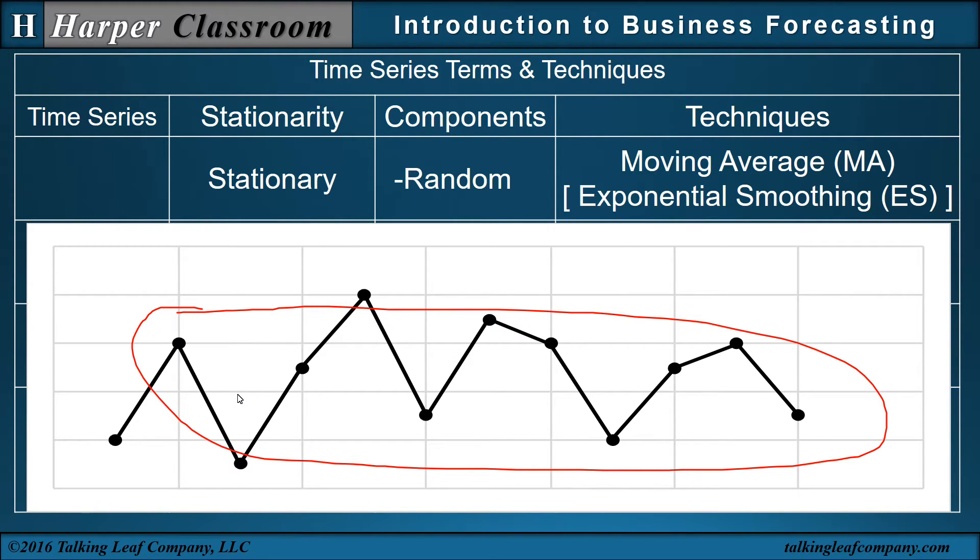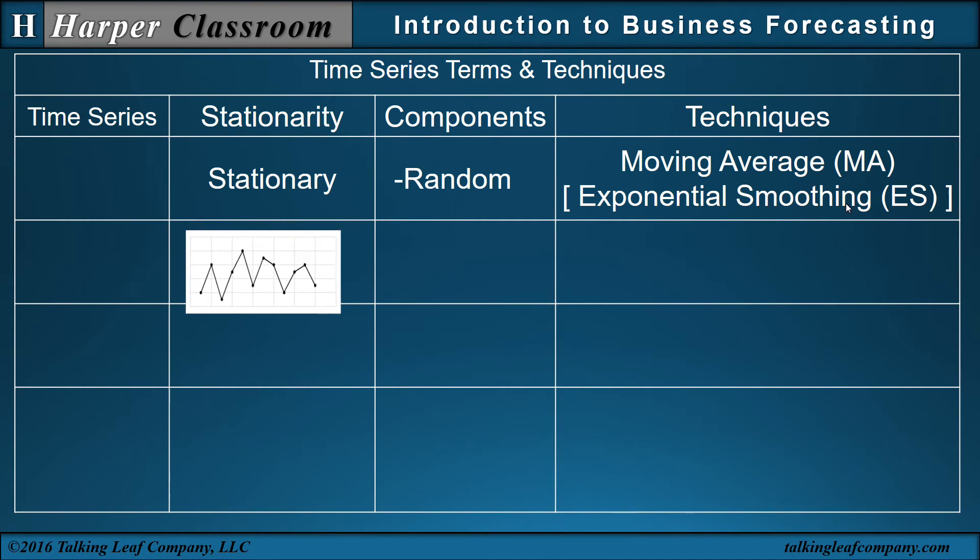Components is a cause of variability. Well, the cause of this variability is unexplained. It is patternless. So therefore, we call that a random component. Now the technique of preference with a stationary time series and a random component is either moving average or exponential smoothing. So that's the first time series.